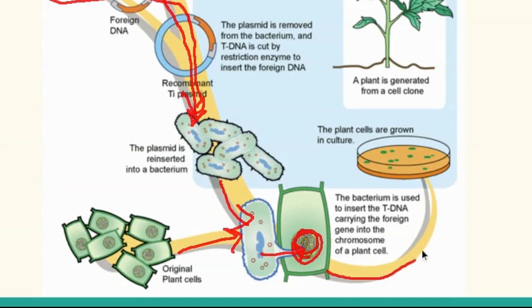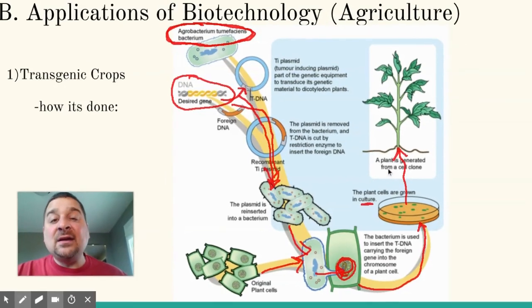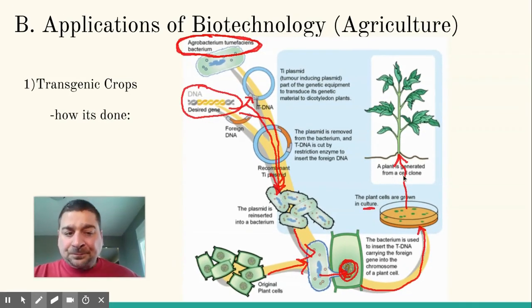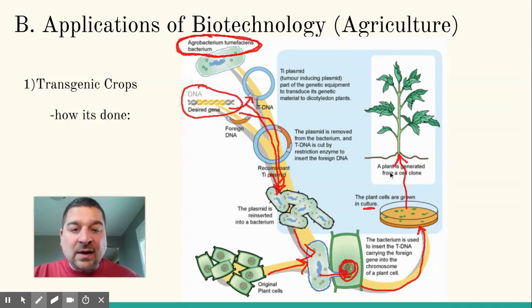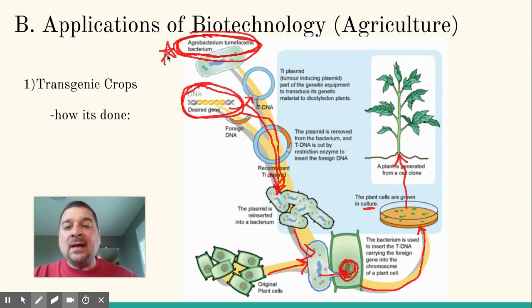The Agrobacterium carries the new gene, like glyphosate resistance, into the plant cells. Then scientists get those plant cells to grow into clumps or cell cultures, and stimulate those to grow into actual plants. This takes years of research to work and to get the gene into the right varieties of corn, soybean, and so forth. You may see the name Agrobacterium again, as it's used quite a bit to make transgenic plants.